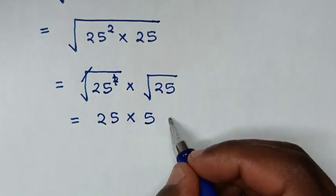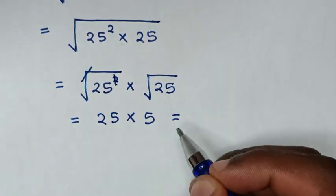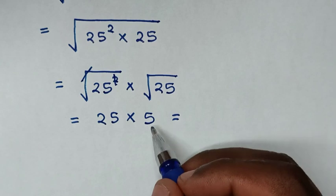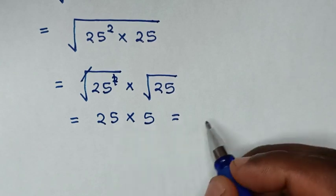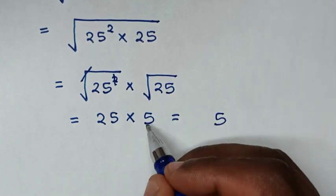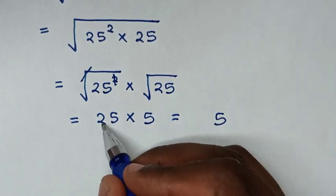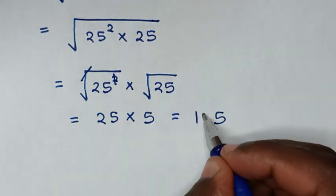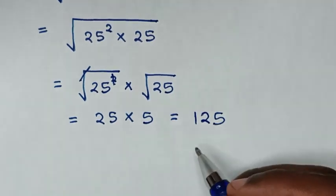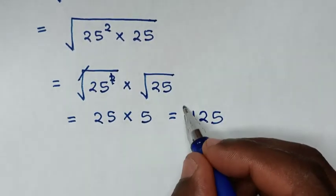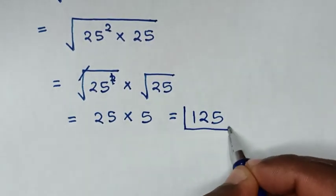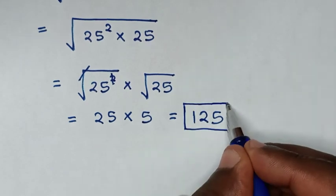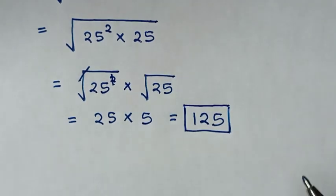So it will be equal to 25 times 5. 5 times 5 is 25, carry 2; 5 times 2 is 10, plus 2 is 12. So 125 is the correct answer.